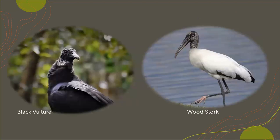Examples of birds that do not have that complex muscle system around the syrinx would be vultures and wood storks. These birds typically produce sounds like hisses and grunts, which is why I don't have a recording of either one.